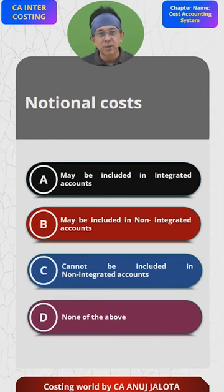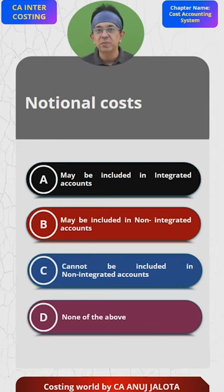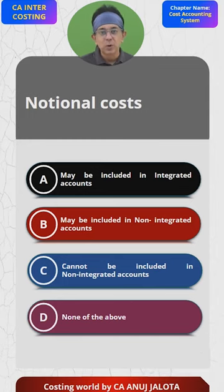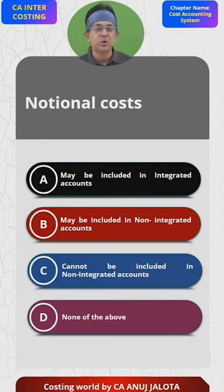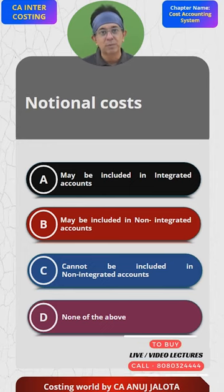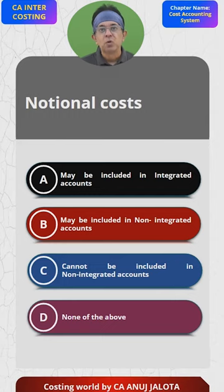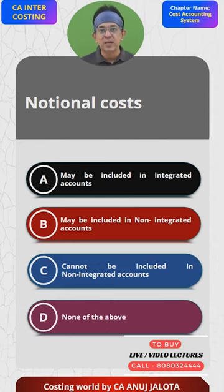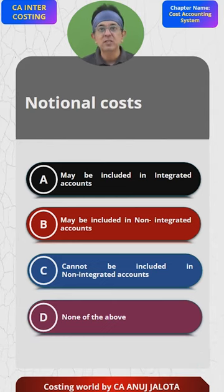One of the reasons we do costing is called inter-firm comparison — the cost of one company can be compared with cost of another. In this example, cost of Maruti cannot be compared with cost of Hyundai because Maruti does not pay rent nor charges depreciation, but Hyundai pays rent. So in order to make the costs comparable, Maruti will be writing notional rent — meaning, if it were paying rent, what would that rent have been?